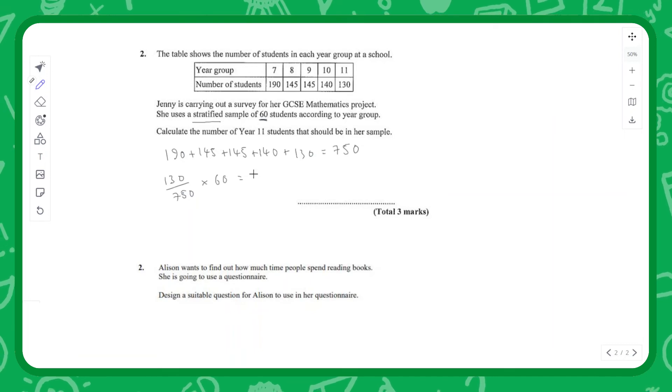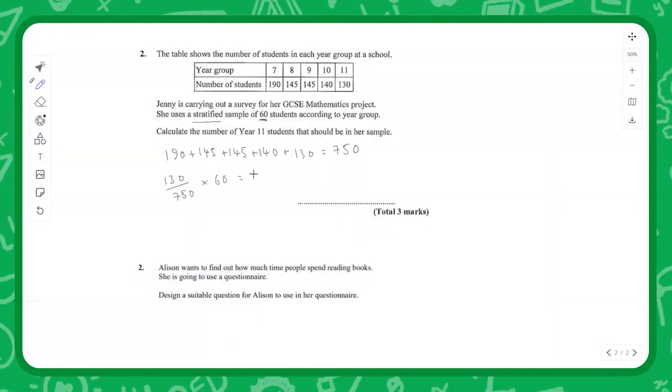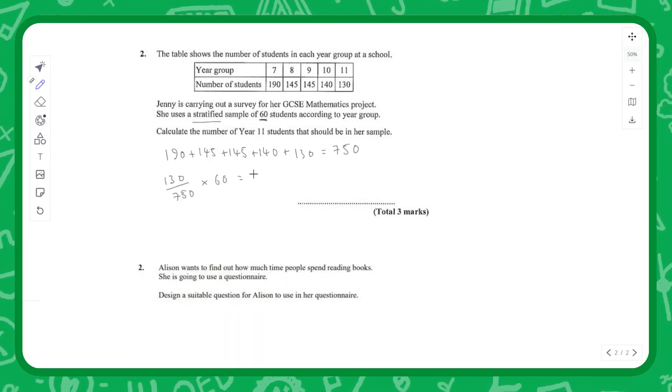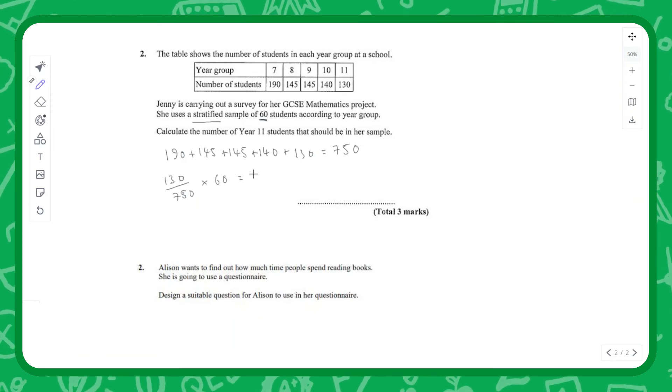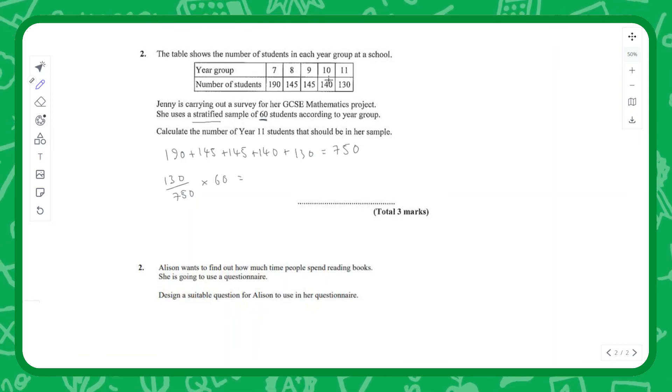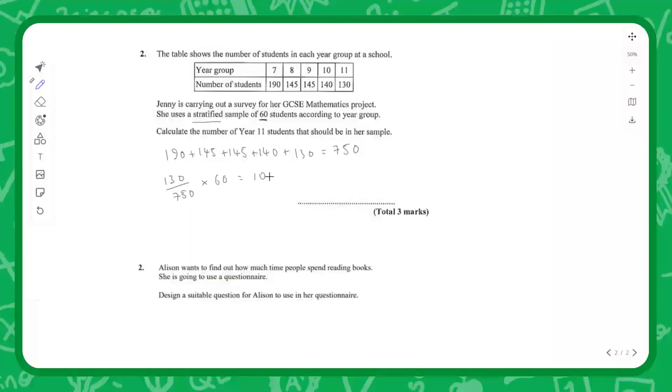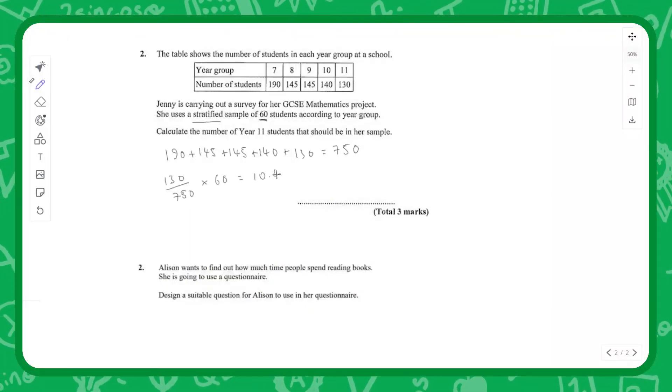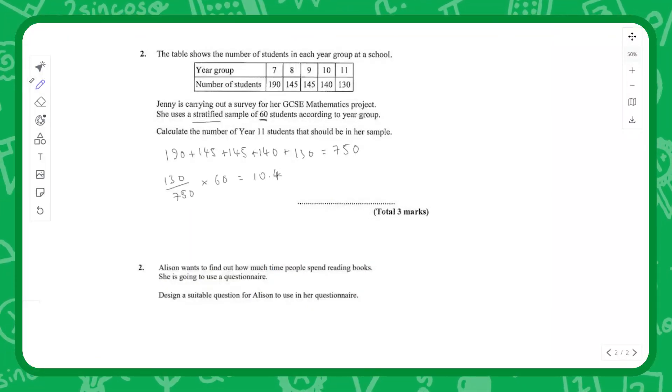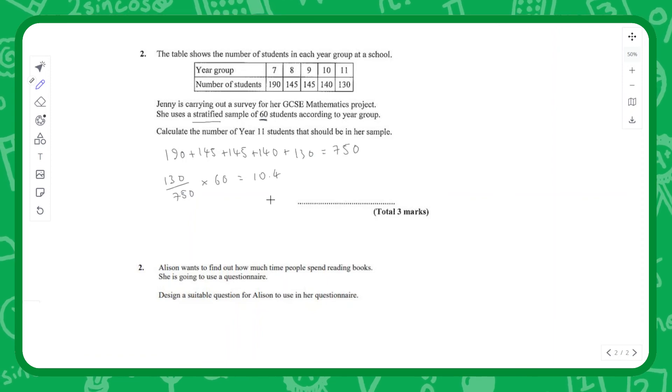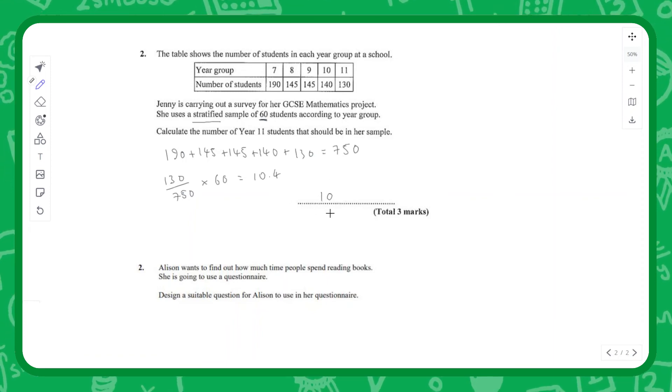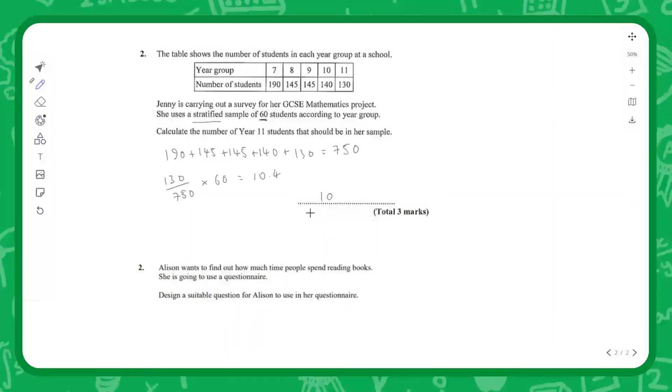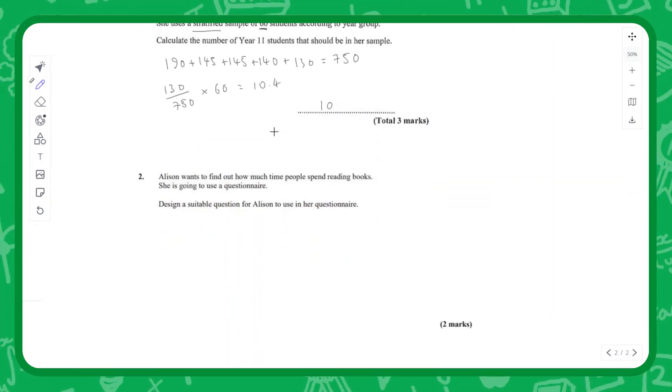If I put this into my calculator, 130 over 750 times 60, we end up with 10.4. Obviously we can't sample just the legs of a student, so we're going to round this to the nearest student, which is 10 students.